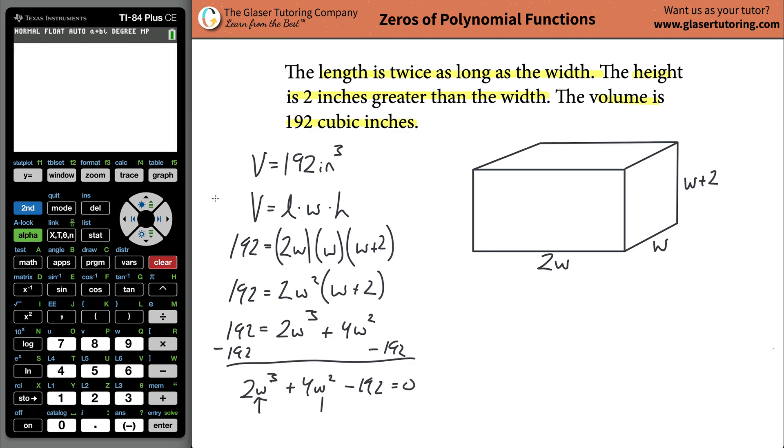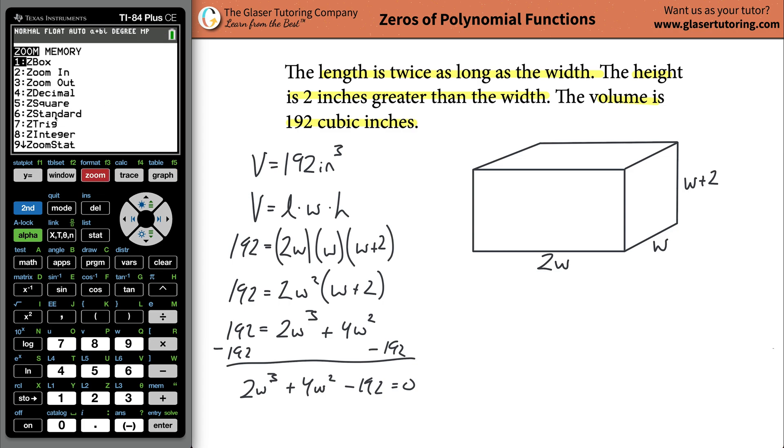We can do this with a calculator, or we can do this by means of the rational zero theorem. First, let me use the calculator because it's just so much easier. If you plug in the function into the calculator, just hit graph. Make sure your zoom is on standard, number six, so it's easy to see.